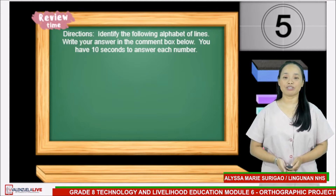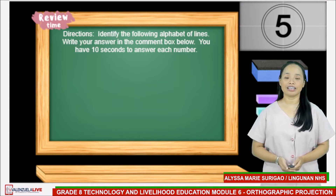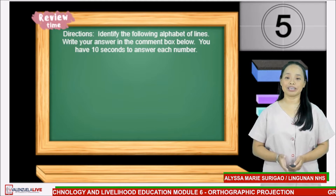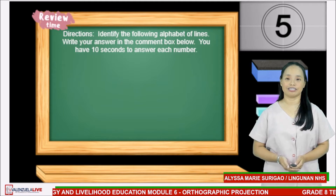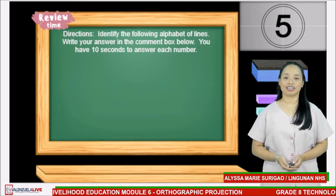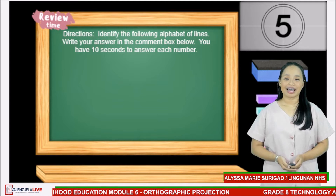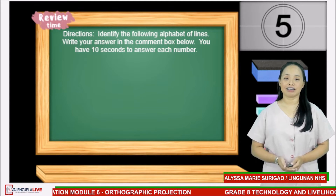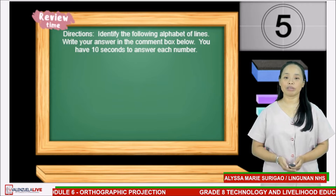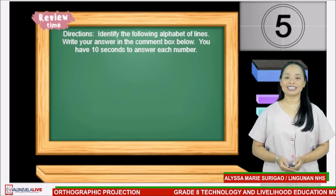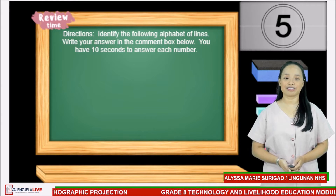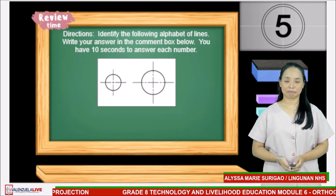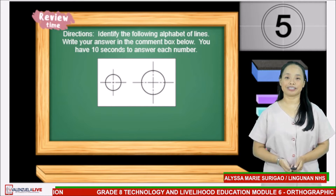Before we proceed to our new lesson, let us have a recap first about the topic discussed in your previous lesson. Direction: Identify the following alphabet of lines. Write your answer in the comment box below. You have 10 seconds to answer each number. Your timer starts now.